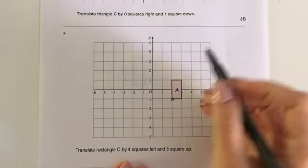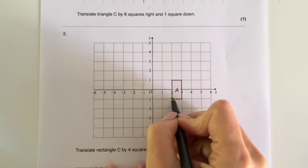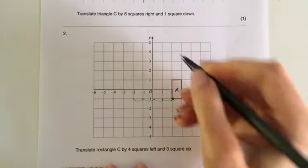Again, I could trace it, and then I would move it. So I just find out where it needed to move to. So one, two, three, four squares left, and three squares up.